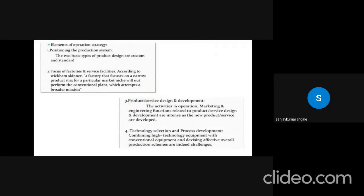There are six types of operation elements. First is positioning of the product system. The two basic types of product designs are custom and standard. Second point is focus on facilities and service facilities. According to Wickham Skinner, a factory that focuses on the narrow product mixes for a particular market niche will outperform the conventional plans which attempts a broader mission.